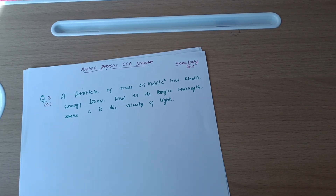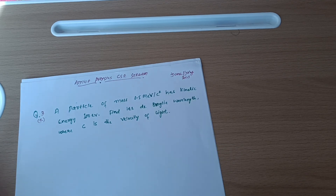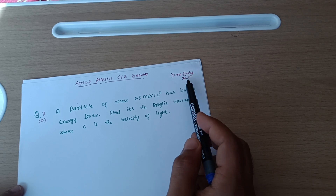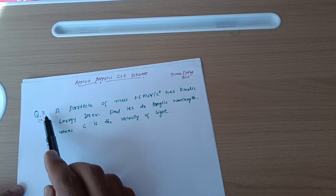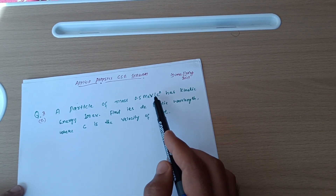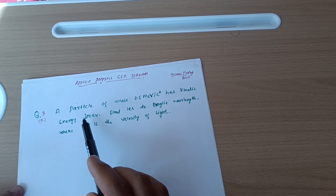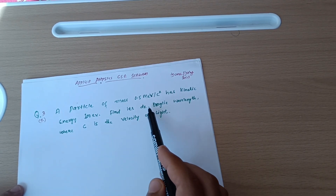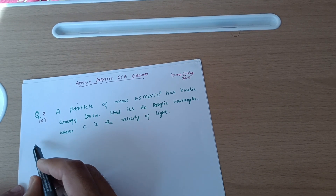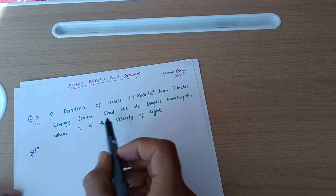Welcome back students. We are discussing the physics numerical part for the CSE stream. I have taken question number 3c from the June/July 2023 paper: a particle of mass 0.5 mega electron volt per c squared has kinetic energy 100 electron volt — find its de Broglie wavelength, where c is the velocity of light. These questions are simply formula-based.